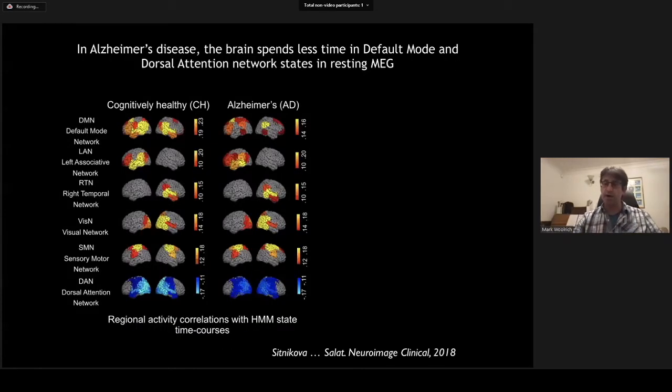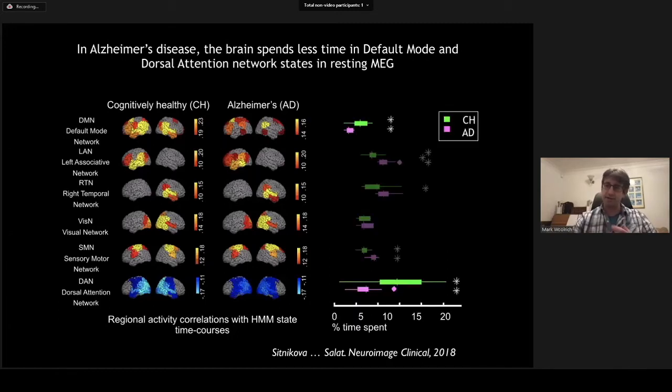So we saw earlier how we can use properties about the dynamics of the brain networks to predict behavioral traits in the fMRI work. Here we're going to do a similar thing with MEG, looking at clinical states. This is work done by David Salat's group from MGH. He took the HMM and applied it to MEG data and found that in Alzheimer's disease, the brain seems to spend less time in the default mode and the dorsal attention network states in the resting MEG compared to healthy controls. So this is another good example of how we can use the properties about the dynamics of the networks rather than the strength of connection that's been classically used from the time-averaged approaches.